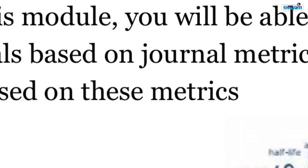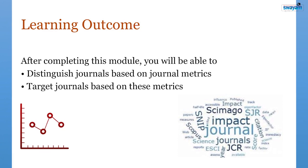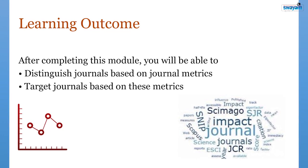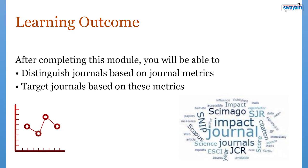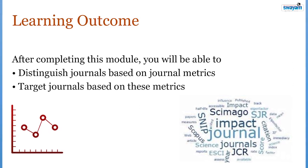As a faculty member and researcher, we are always concerned about targeting a suitable journal for our research paper. Recently, UGC has come up with a committee — the Consortium of Academic and Research Ethics — which has enlisted quality journals. This benchmarking is done through bibliometrics, covering both journal metrics and author metrics. In this module, we will discuss general journal metrics. After completing this module, you will be able to distinguish and target journals based on these metrics for your research papers.